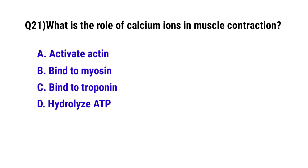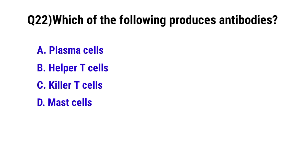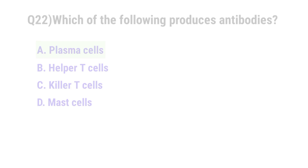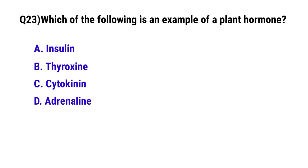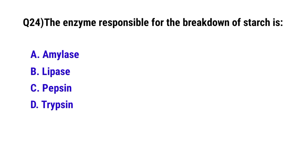Question 22: Which of the following produces antibodies? The correct option is A: plasma cells. Question 23: Which of the following is an example of a plant hormone? The correct option is C: cytokinin. Question 24: The enzyme responsible for the breakdown of starch is? The correct option is A: amylase.